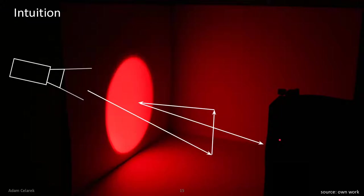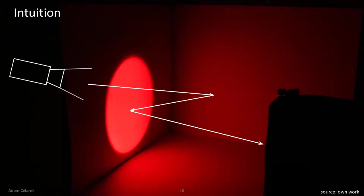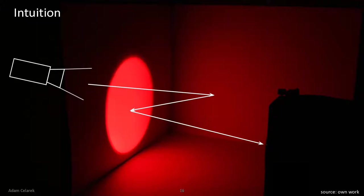Only a full path connecting the sensor and the light source is a measurement — only these paths have a contribution. If there is some blocking element, there is zero contribution. At each reflection we collect factors for the material, the cosine, and other things, and finally multiply them all together with the radiance of the light source. This is called tracing importance, which is the adjoint operation to tracing photons or bundles of photons.